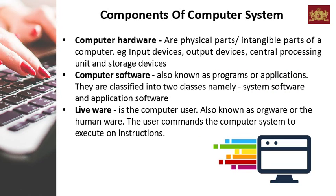Components of a Computer System. Computer Hardware refers to the physical parts of a computer, e.g. input devices, output devices, central processing unit, and storage devices. Computer Software, also known as programs or applications, is classified into two classes namely system software and application software.